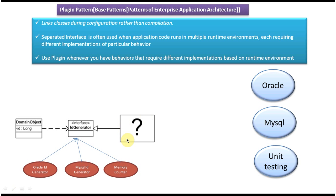Here we have a question mark, meaning what should be plugged in for this ID generation — what should be plugged in based on the environment, the runtime environment. If the runtime environment is Oracle, then the ID generator should be Oracle ID Generator. If the environment is MySQL, then the ID generation should be MySQL ID Generator. And if the environment is unit testing, then we have to use Memory Counter.